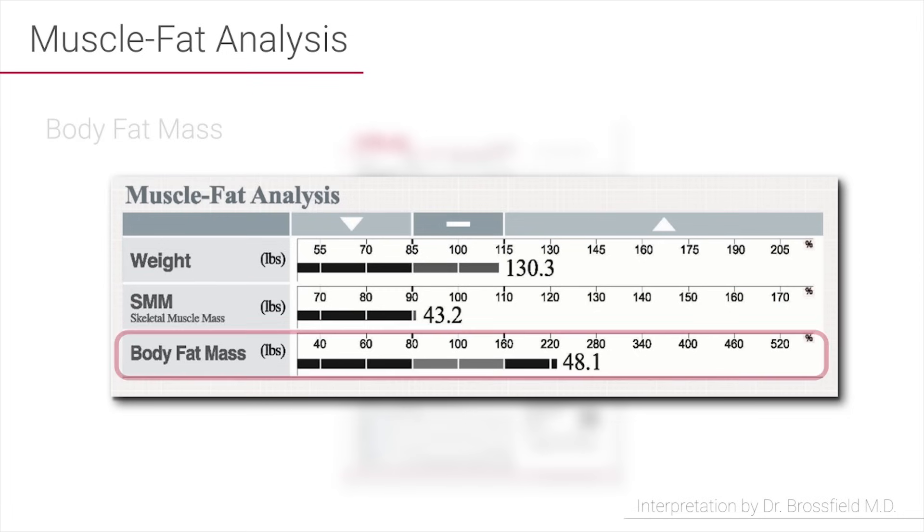If you drop to the next line, the body fat mass, which is the bottom line of the muscle-fat analysis box, is also an indicator of how many pounds of fat you carry in your body, and you'll be able to see by where that line reaches whether you're in the under fat, normal fat, or over fat range.